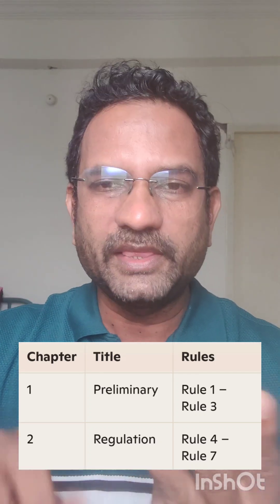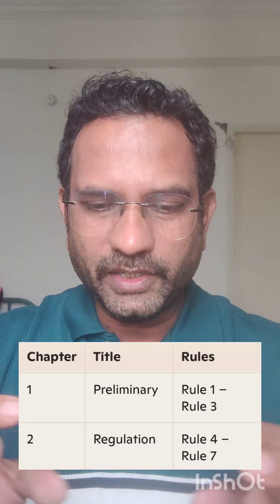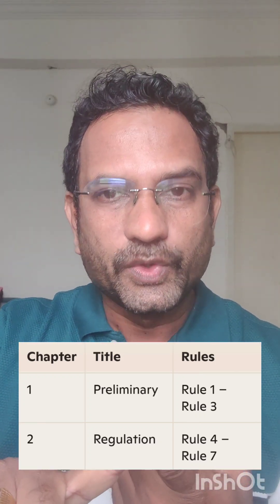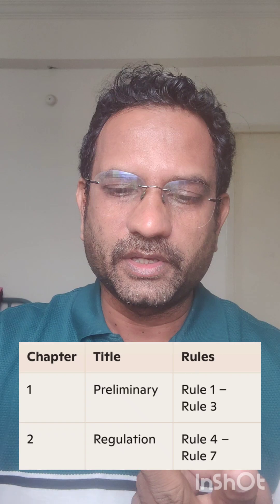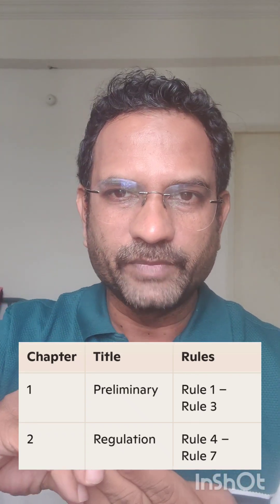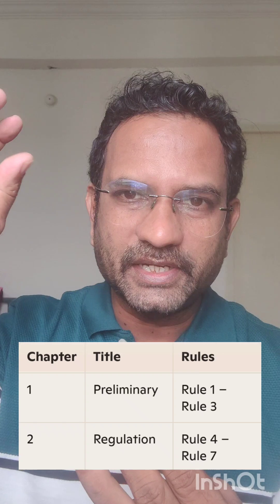Application specifies to which products these rules apply — medical devices. Then definitions are provided. There are three rules in this preliminary chapter: Rule 1 covers short title and enforcement, Rule 2 covers application, and Rule 3 covers definitions. If you know the chapter title, you understand what each rule belongs to.